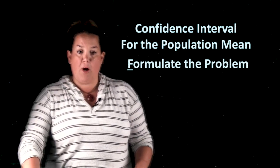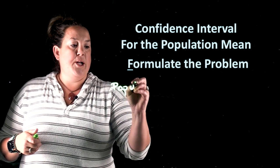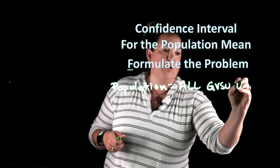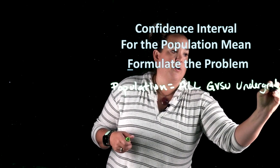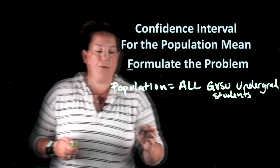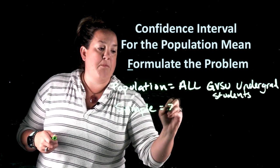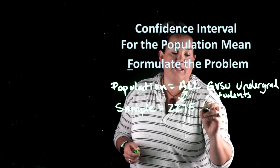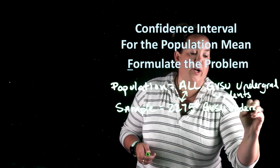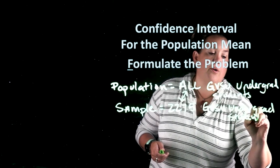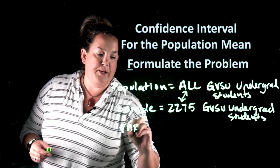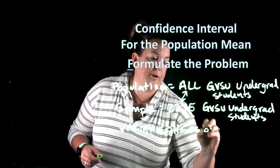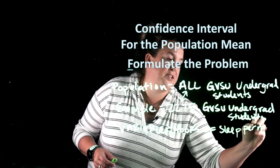Starting with Formulate the problem, we begin with the population — here it's all GVSU undergraduate students. The next thing we state is the sample, and remember the sample size is the key difference: the population is 'all' and the sample is the number, so this is 2,275 GVSU undergrad students. Then we state the variable of interest, which is the hours of sleep per night.